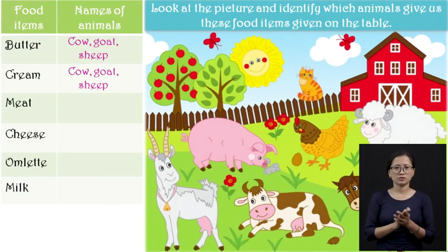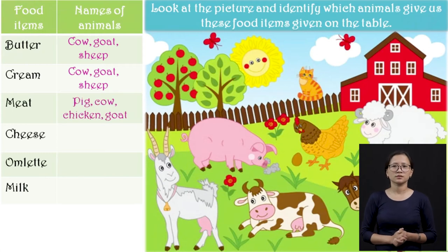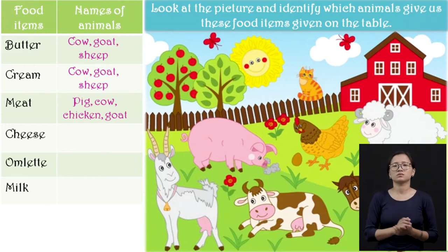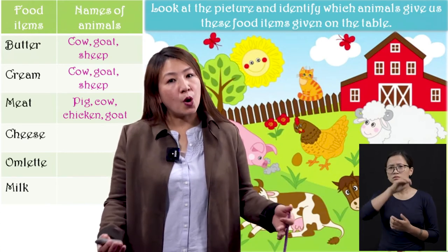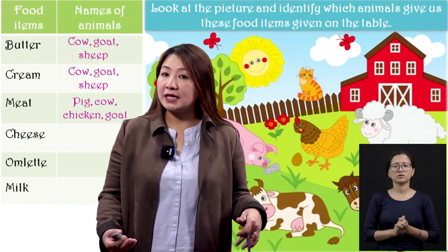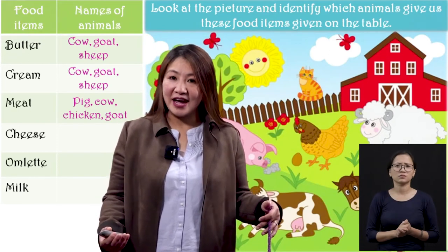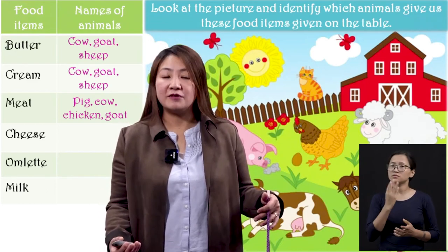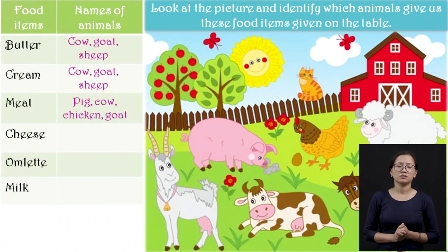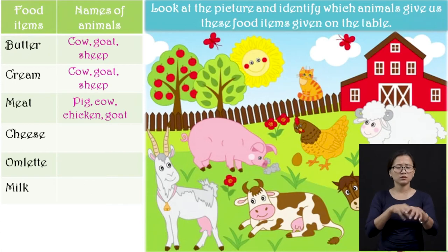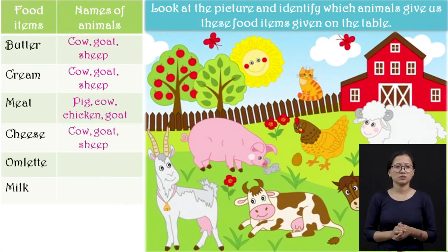Which of these animals gives us meat? Pig, cow, chicken, and goat — we eat all this meat. The meat of a pig is called pork, the meat of cow is called beef. Chicken — yummy, tasty chicken! And from goat, we also take meat. So goat, cow, chicken, and pig give us meat. And cheese — just like butter, cow, goat, and sheep give us cheese.